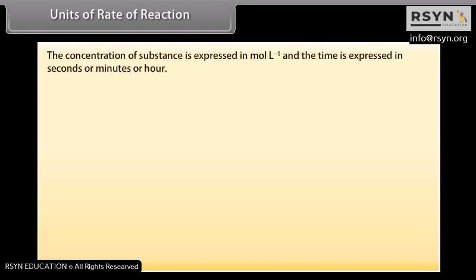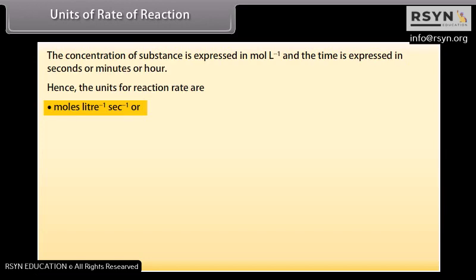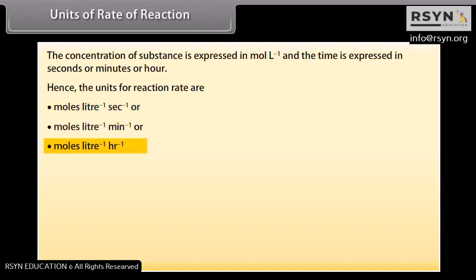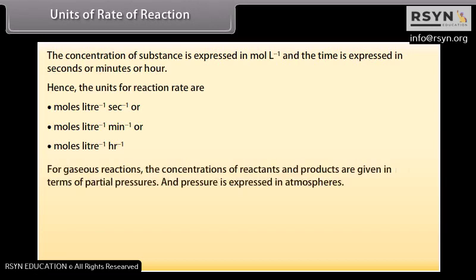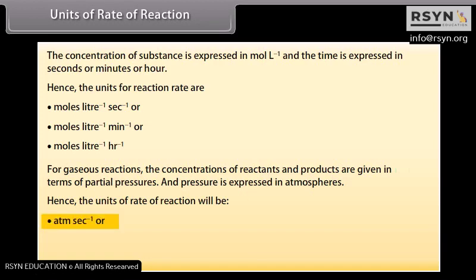Quantitative rate may be expressed by two ways: the rate of decrease in concentration of any one of the reactants, or the rate of increase in concentration of any one of the products. The concentration of substance is expressed in mol per litre and time in seconds, minutes, or hours. Hence, units for reaction rate are mol/L/s, mol/L/min, or mol/L/hr. For gaseous reactions, concentrations are given in terms of partial pressures expressed in atmospheres; hence units of rate of reaction will be atm/s, atm/min, or atm/hr.